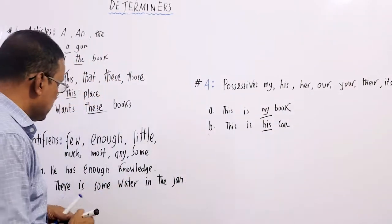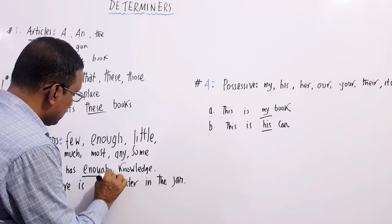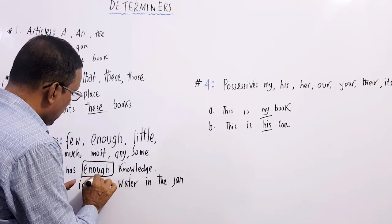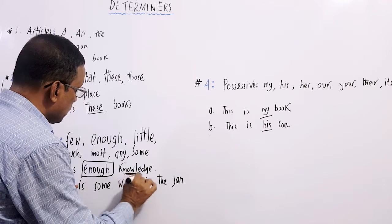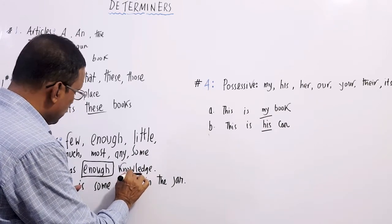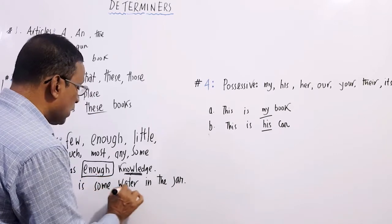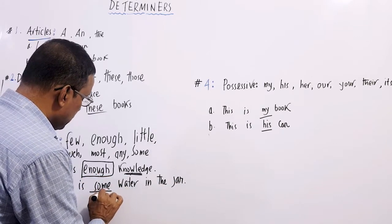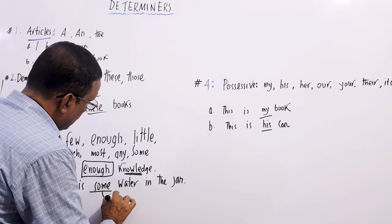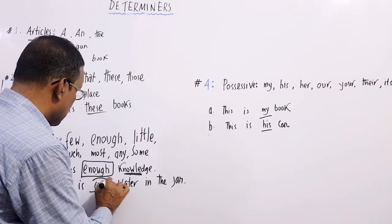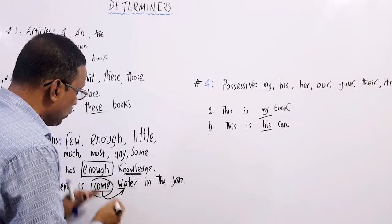Let's look at the sentence here: He has enough knowledge. 'Enough' is a determiner and it is modifying 'knowledge'. Knowledge is a noun modified by the determiner 'enough'. Here's another: There is some water in the jar. 'Some' is a determiner modifying the noun water. This is telling about the quantity or amount of a noun.